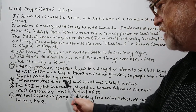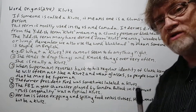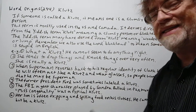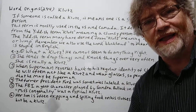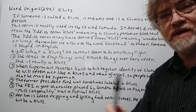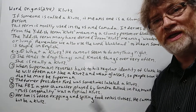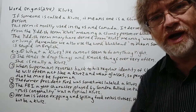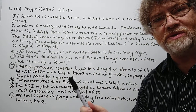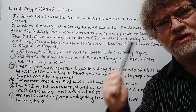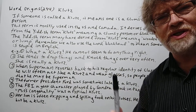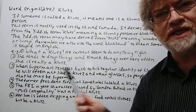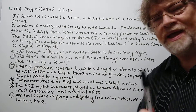Number five: 'The FBI agent character played by Sandra Bullock in the movie Miss Congeniality was a typical klotz.' Before they made her look beautiful and before she had to join the beauty pageant, even though she was a very determined police officer, she'd often mess things up by being very clumsy, dropping things, things like that.